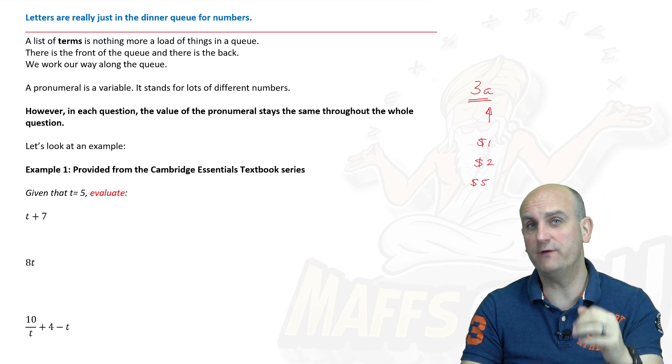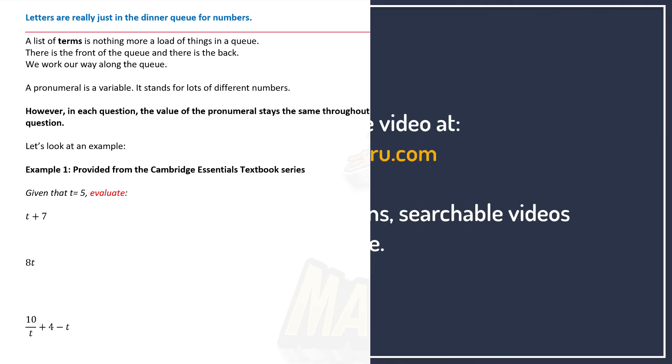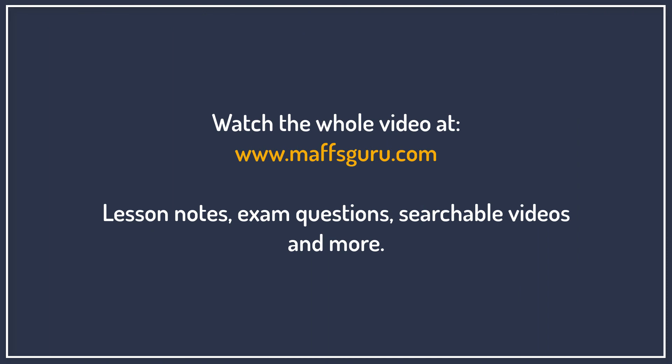The point of algebra is: if I decide in one question that the value of A is going to be five, then for that whole question — or that whole part of a question — the value of A will stay as five.